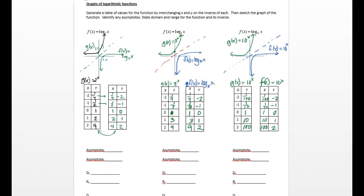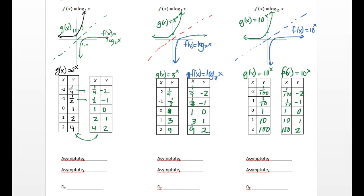Now I want us to look at the asymptotes. The little 'e' right here underneath is the exponential function, and the 'l' is for the logarithmic. Look at the exponential only — where's the asymptote? There's an asymptote right there where y is equal to zero. Then where's the asymptote for the logarithmic? It approaches the y-axis but won't cross it — that is where x equals zero. For log base 3, the exponential asymptote is still y equals zero, and the logarithmic asymptote is x equals zero. Same pattern holds for log base 10: y equals zero for exponential, x equals zero for logarithmic.